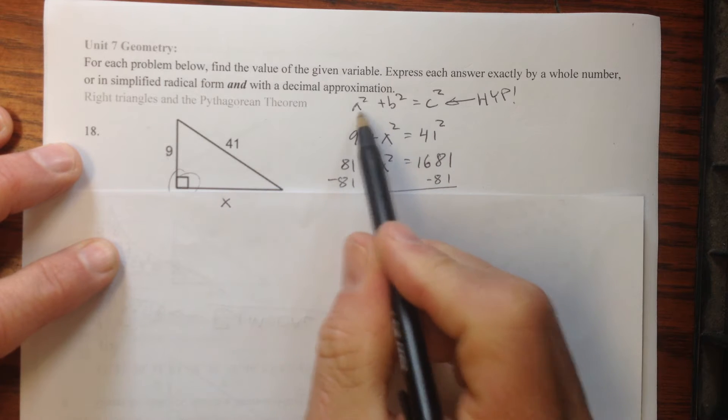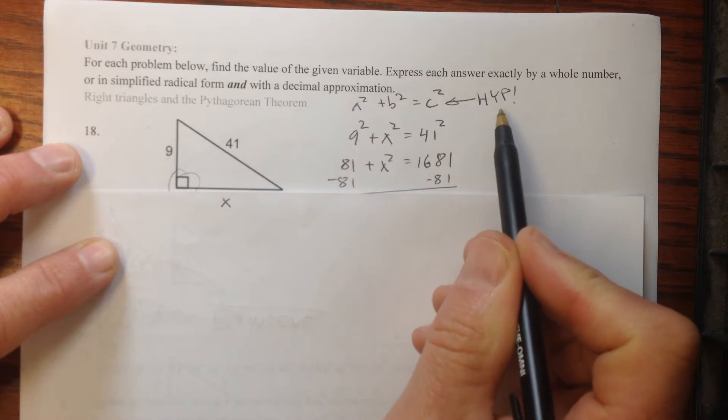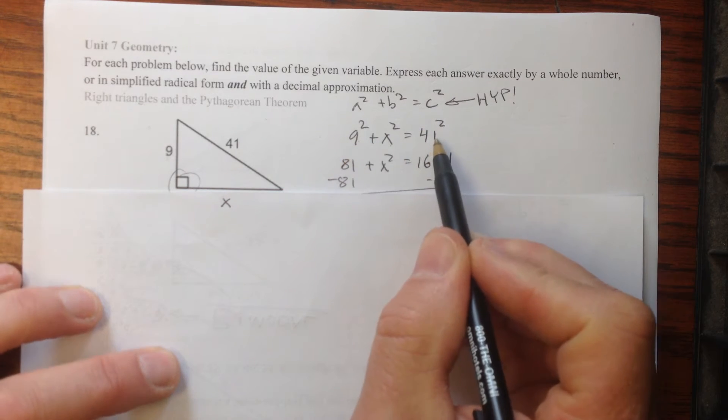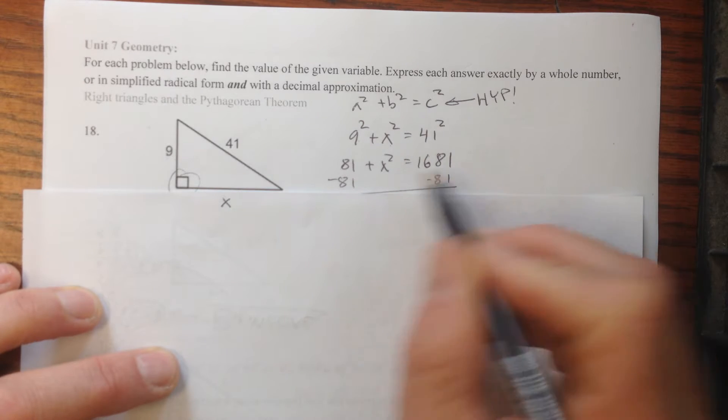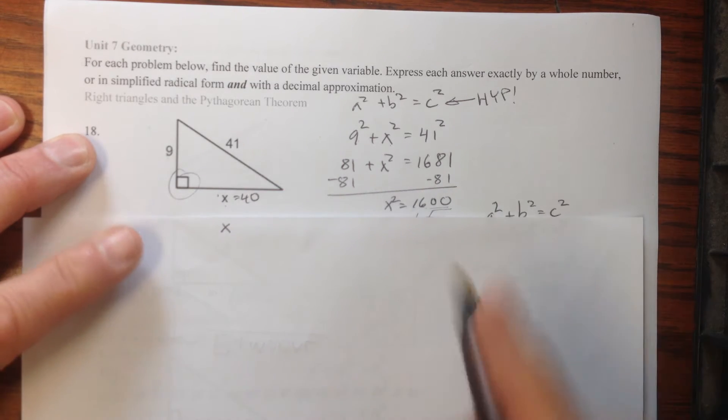So we know that it's a squared plus b squared equals c squared. The c squared is the hypotenuse, just don't get that mixed up. And I fill in 9 and I fill in 41 and I'm good to go, 41 times 41 is 1681, 9 squared is 81.